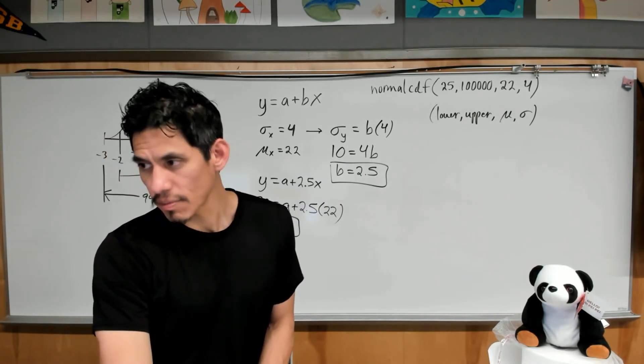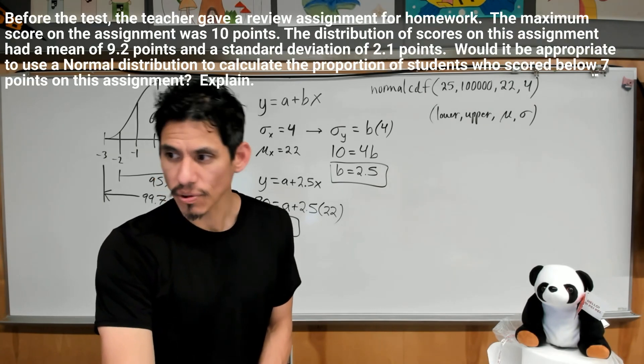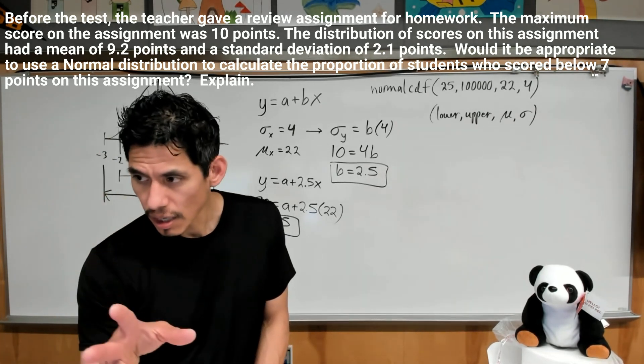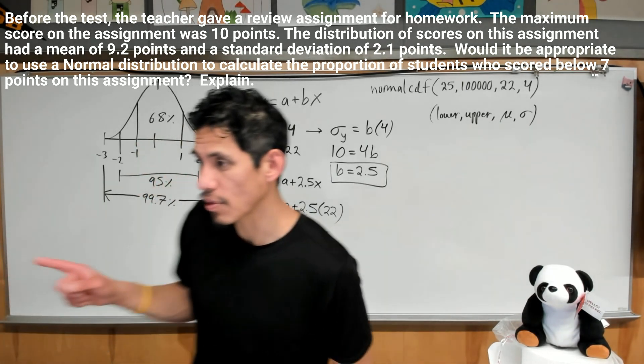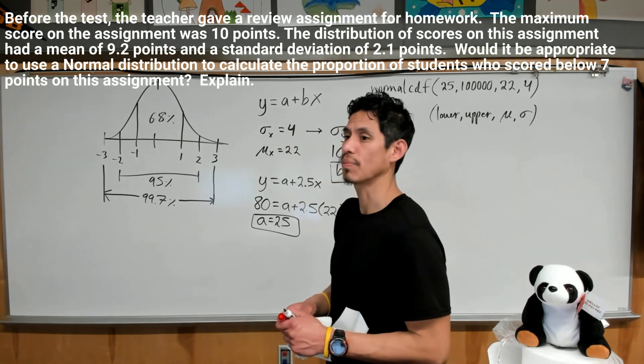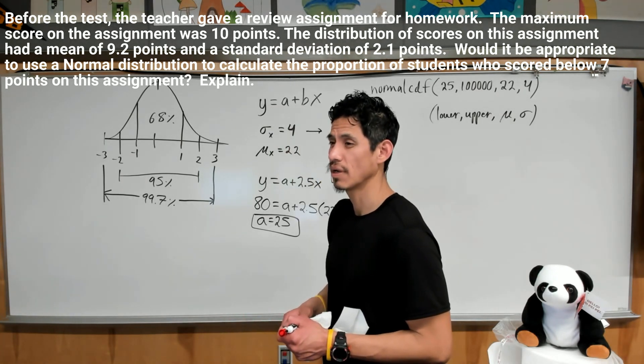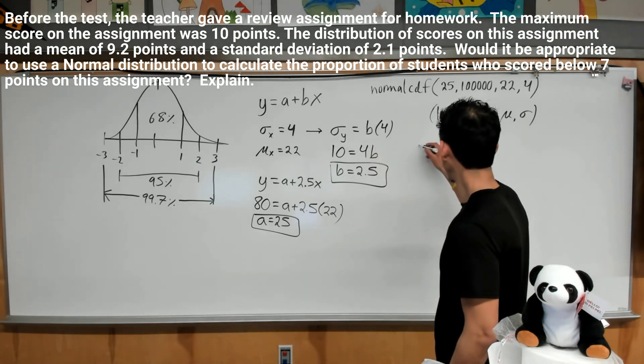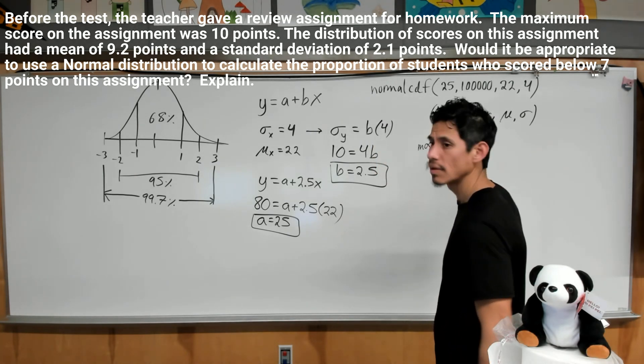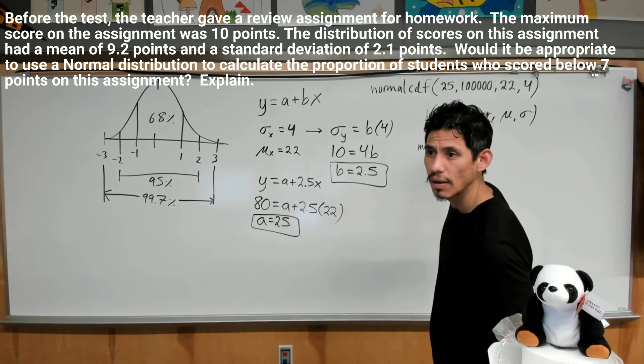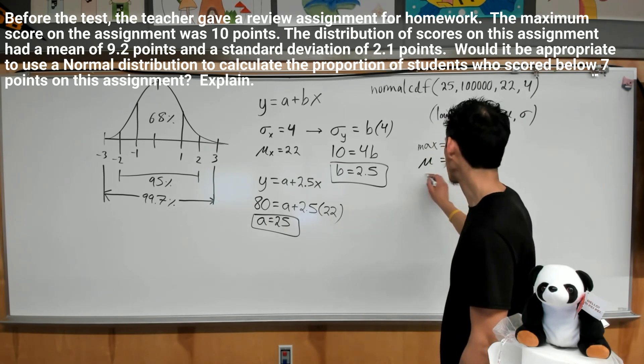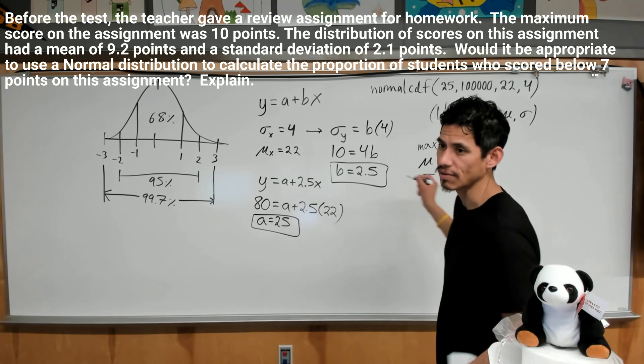And last part. Before the test, the teacher gave a review assignment for homework. The maximum score on the assignment was 10 points. The distribution of scores on this assignment had a mean of 9.2 points and a standard deviation of 2.1 points. Would it be appropriate to use a normal distribution to calculate the portion of students who scored below 7 points on the assignment? Okay, so the maximum score was 10 points, the mean was 9.2, standard deviation was 2.1. Okay, so this is not going to be it. I can already tell, but let's just draw a visual.